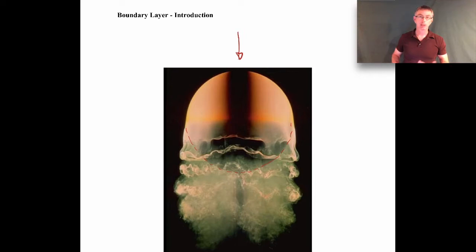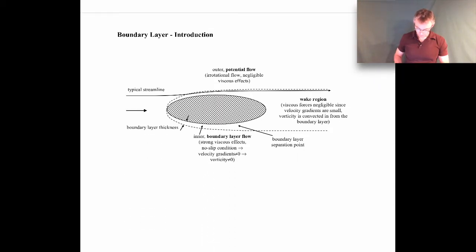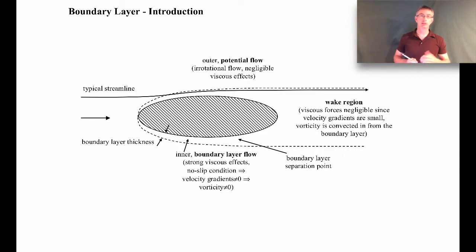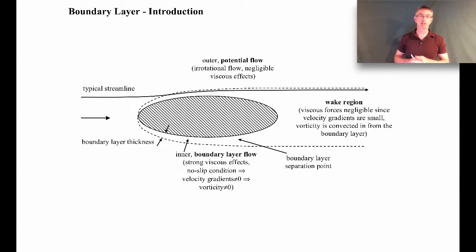Let me show a schematic so we can talk about the structure of a boundary layer in more detail. First, a little history: the concept of a boundary layer is actually pretty recent. A lot of fluid mechanics was developed in the 1700s and 1800s, but the boundary layer concept came in the early 1900s. A researcher named Ludwig Prandtl had the idea that most of the viscous stresses in a fluid flow occur in a thin layer next to the surface, which he called a boundary layer.